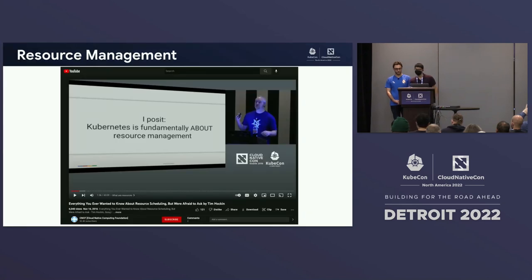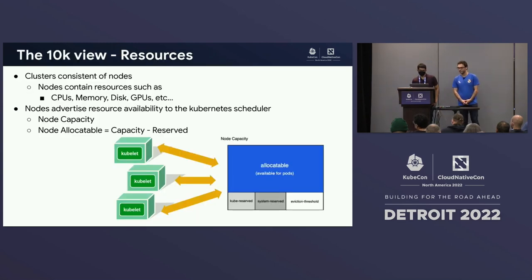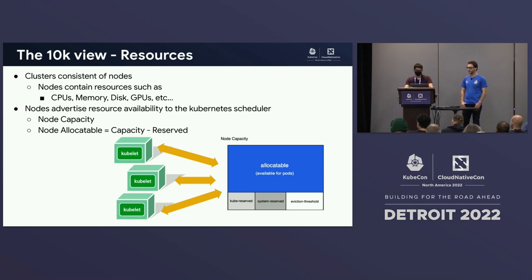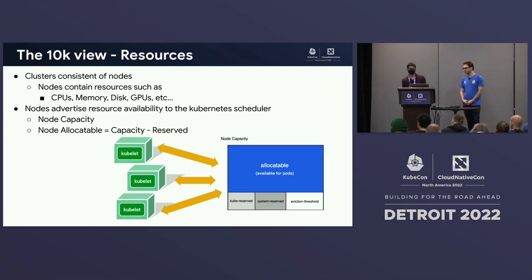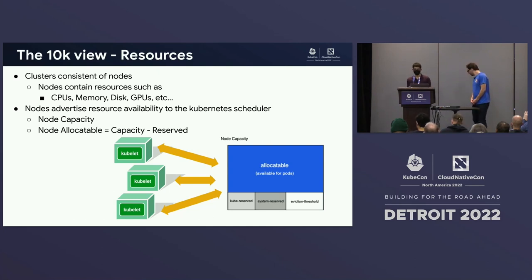We're going to talk about resource management — what is resource management really in terms of Kubernetes? Here's a 10,000-foot overview. Clusters consist of nodes, and nodes have resources like CPUs, memory, disk, GPUs. Resource management is about managing these resources. Nodes advertise availability to the Kubernetes scheduler. You have some amount of memory on your node, say 32 GB. You reserve some for the system, some for the Kubelet and container runtime, and what remains — say 24 GB — is advertised to the scheduler as allocatable.